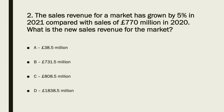To answer question two, you simply need to take the 770 million in 2020 and multiply that by 1.05, which comes to 808.5 million. So the answer to two is C.